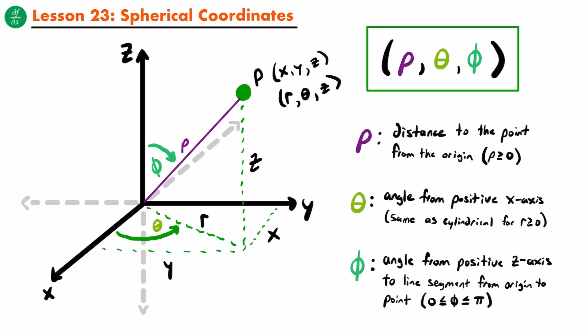Now that you've been introduced to the spherical coordinate system, throughout the rest of this lesson we are going to look at how we can convert from spherical coordinates to our other coordinate systems — the rectangular coordinate system and the cylindrical coordinate system. For a point P, we can represent it with three different sets of coordinates: x, y, z for rectangular; r, theta, z for cylindrical; or rho, theta, phi for spherical. We want to determine how to convert from spherical coordinates to these other coordinates and vice versa.